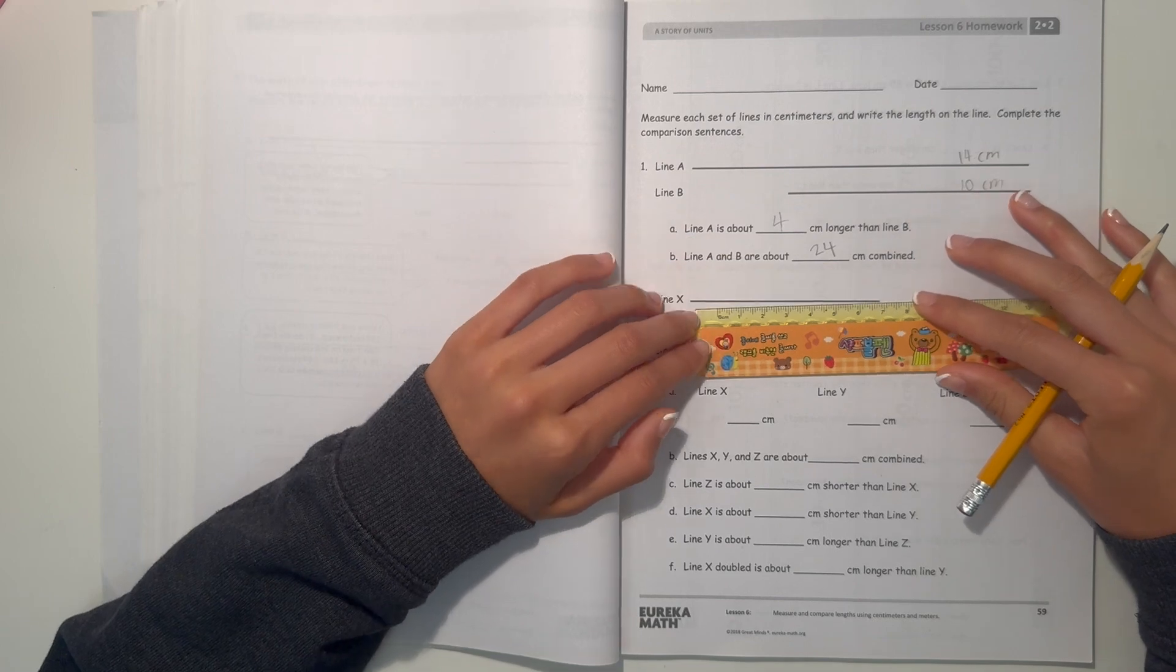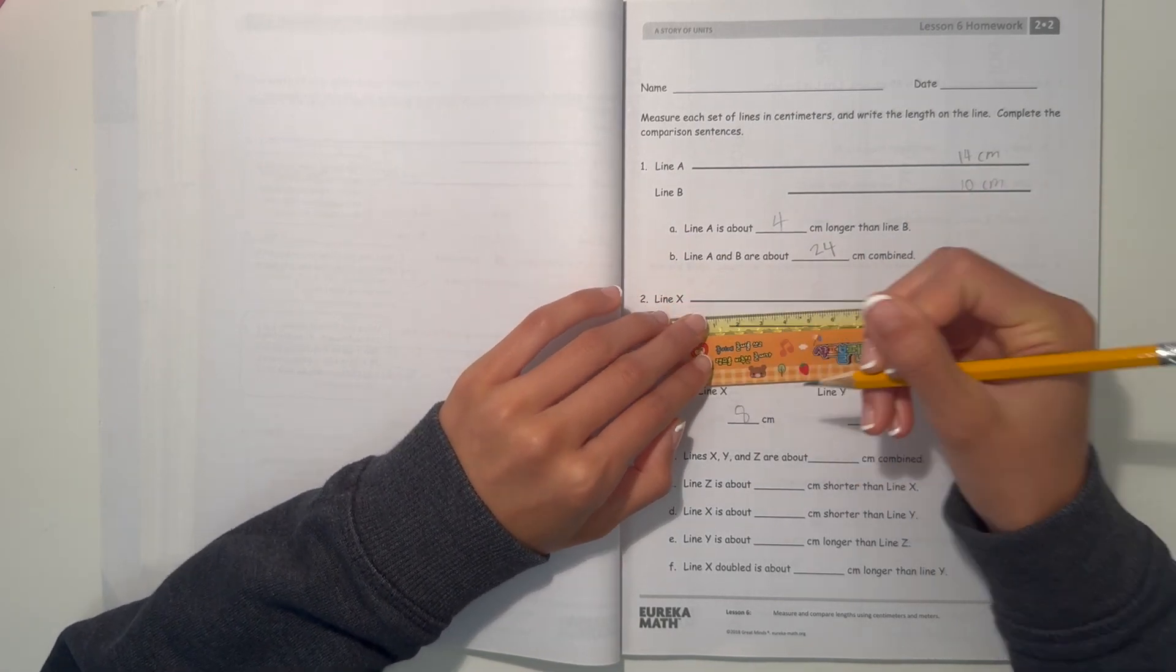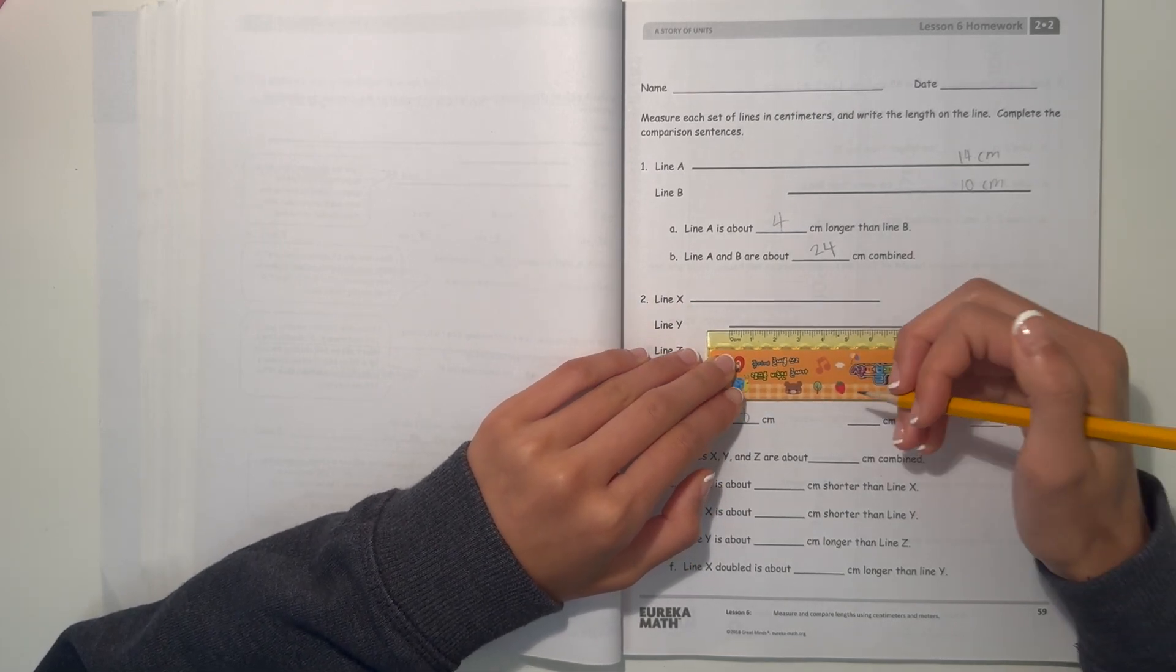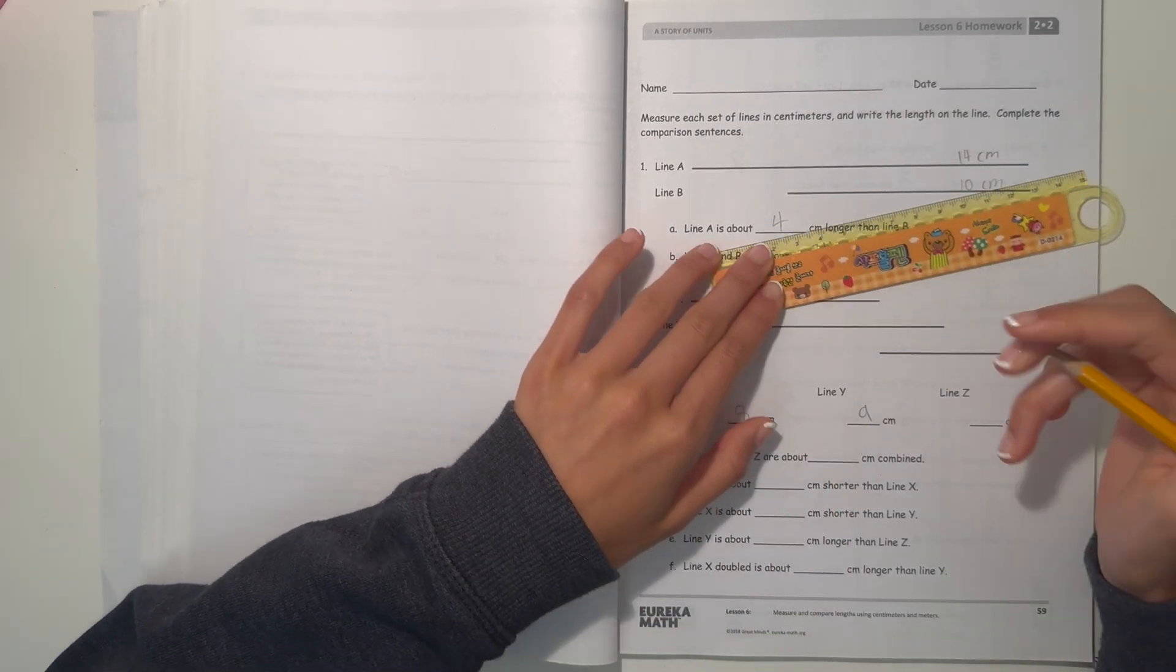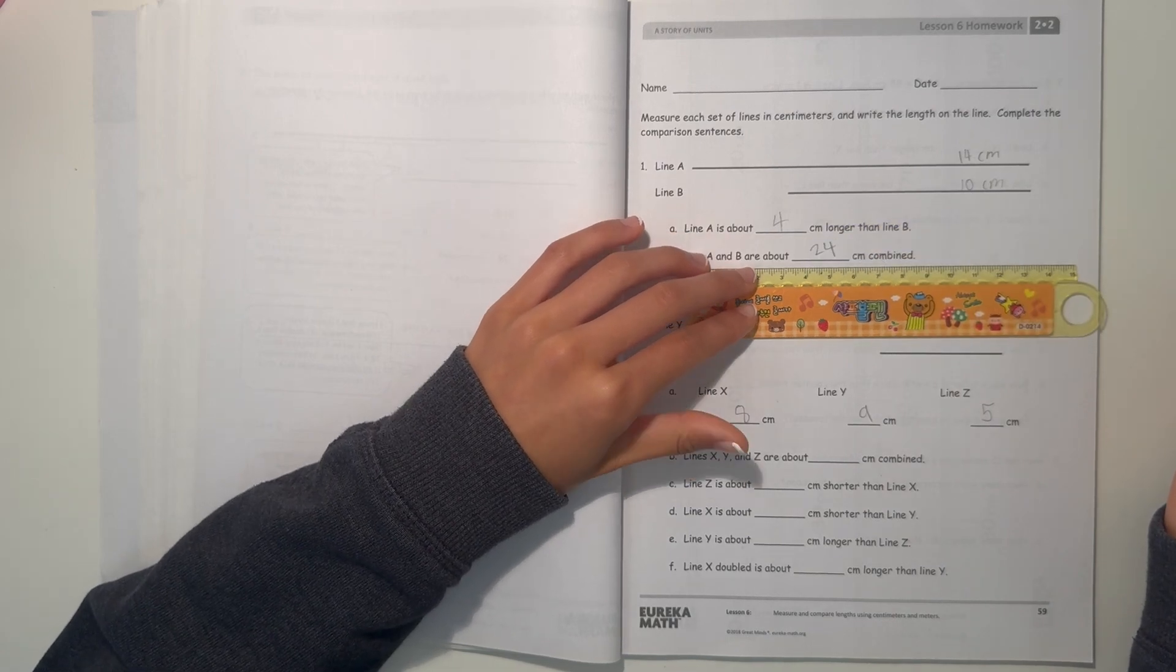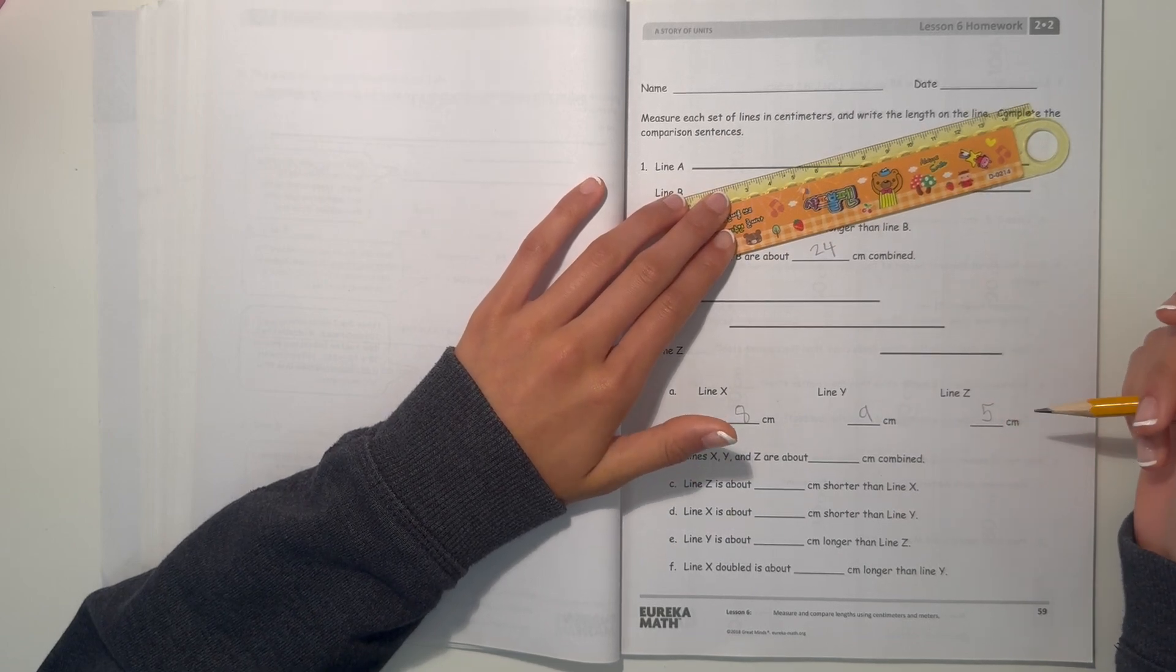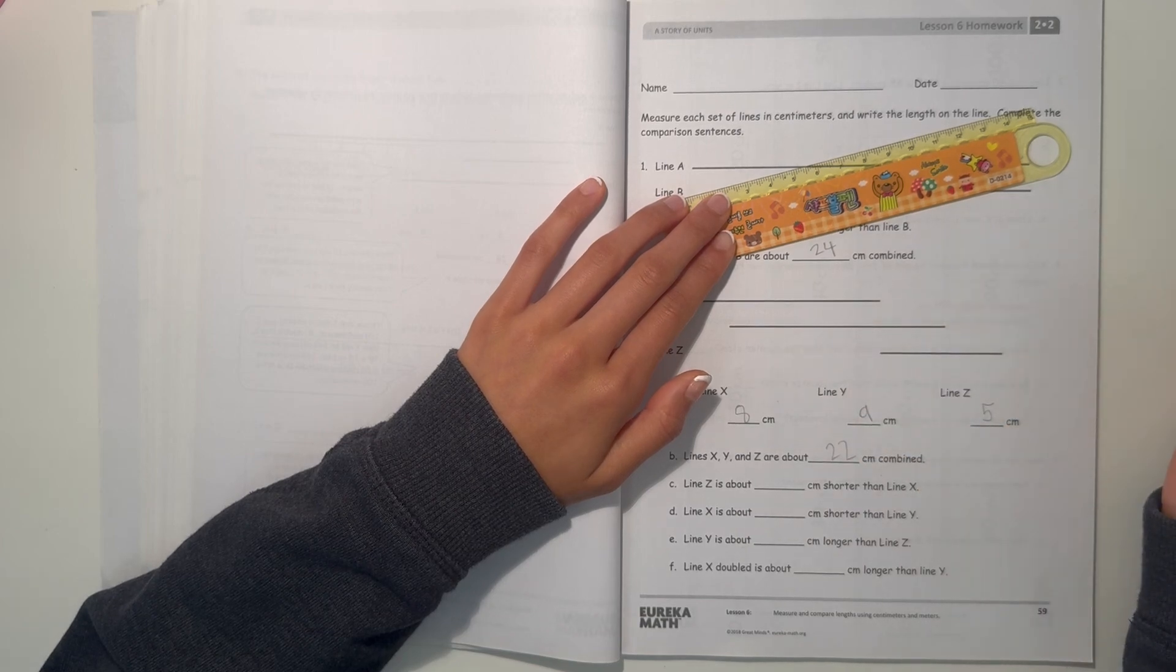And now let's see line X. We have 8 centimeters. Line Y, we have about 9 centimeters. And line Z over here, it's about 5 centimeters. So let's see. Lines X, Y, and Z are about blank centimeters combined. So 8 plus 5 is 13 plus 9 is 22. So it's about 22 centimeters combined.